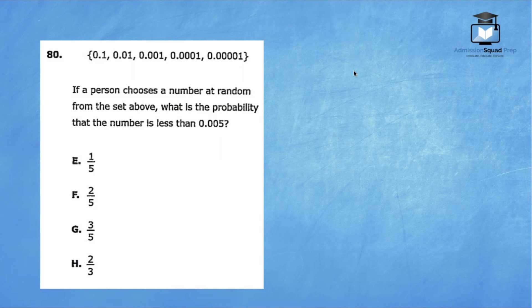Question number 80. We're given a data set. If a person chooses a number at random from the set above, what is the probability that the number is less than 0.005? When working with decimals, I prefer to line up our decimals so we can see exactly what's going on. Let's start off by writing 0.005 because that's what we want to compare it to, and we'll line up all of the other numbers right underneath.